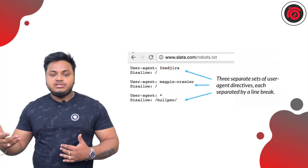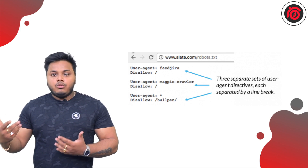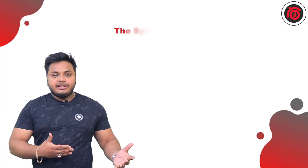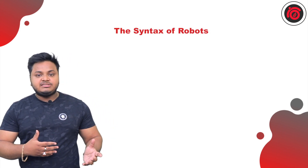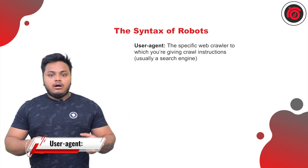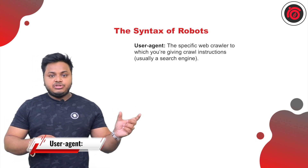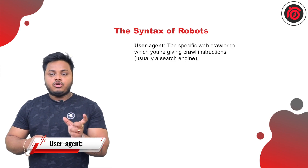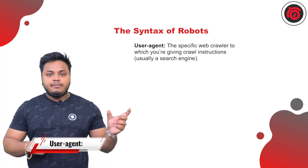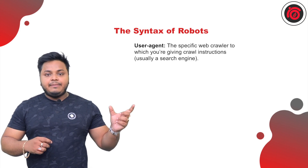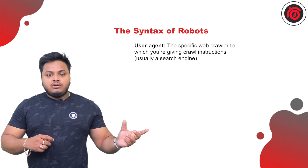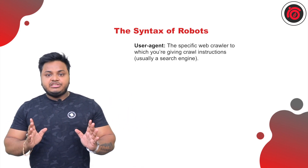The basic syntax of robots.txt starts with the user-agent. A user-agent is the definition of the crawler — this can be Googlebot, Bingbot, or any bot identified as a web crawler. User-agent is all about defining the bots on which a website should or should not crawl.